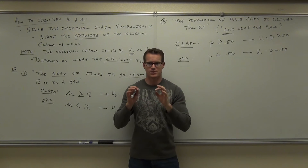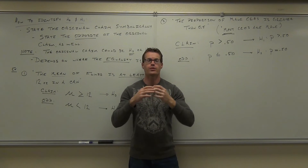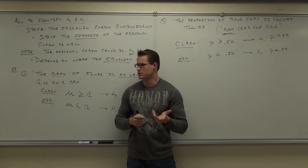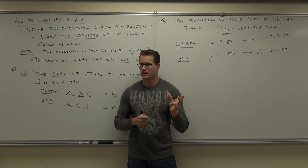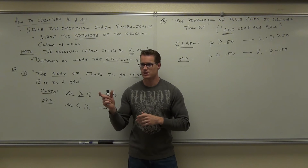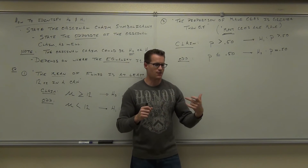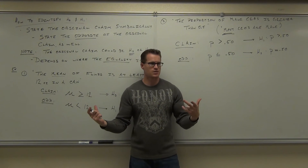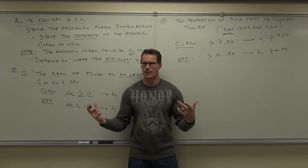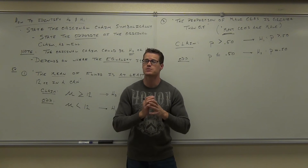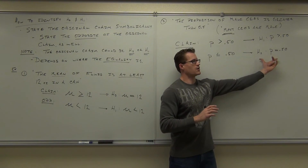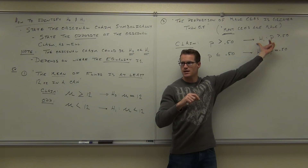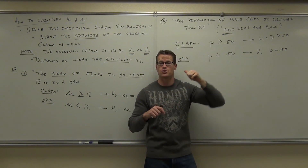The only thing you can do is disprove H sub zero — that's all this whole process does. You can either disprove it or fail to disprove it. Failing to disprove something doesn't prove it right. If you test H sub zero and find it wrong, that means H sub one is right. If you can find H sub one right, that means you proved this statement. If your statement is set up as your claim, you just proved your claim. Notice how your claim is your H sub one.